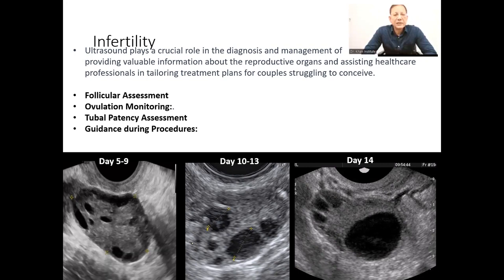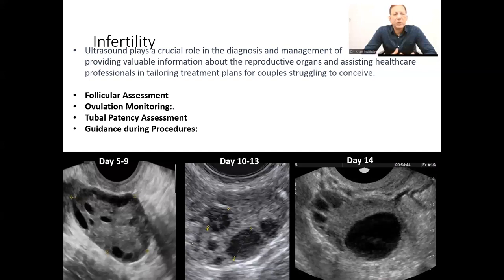We can also look through ultrasound at blockages and other abnormalities in the fallopian tubes, which are tubular structures on the side of the uterus. The ovum released by the ovary is carried by the fallopian tubes to get fertilized. If the fallopian tubes are blocked due to any reason like fibrosis or chronic pelvic inflammatory disease, these can be detected by ultrasound. Ultrasound is also commonly used in IVF for retrieval of the egg — it guides the needle to the follicles for extraction of eggs.